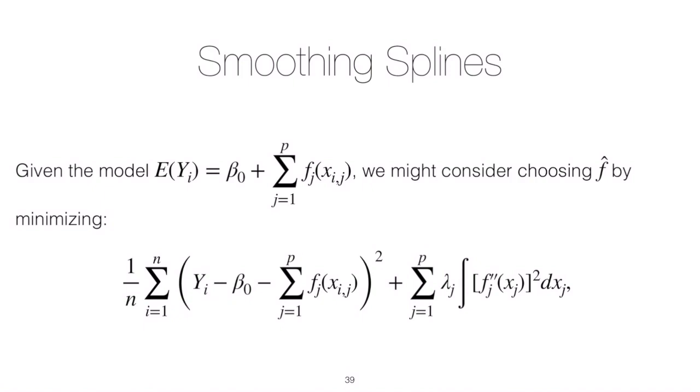Here's a way to generalize. In the GAM framework we have a similar model, but we just have many f's now—we have p fⱼ's, one for each of our p predictors. We could consider doing something similar: we have something like an MSE term and a penalty term. Again, this here is an MSE and this is a roughness penalty, but they're a bit different.